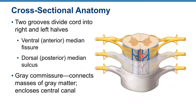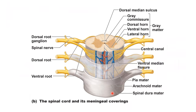Two grooves divide the cord into right and left halves: the ventral median fissure (anterior median fissure) and the dorsal median sulcus. The gray commissure connects the gray masses and encloses the central canal. Inside, there is a central canal, then gray matter and white matter. Gray matter has horns — the ventral gray horn, dorsal gray horn, and in some regions a lateral gray horn — and white matter surrounds the gray.